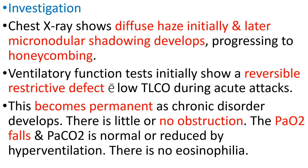Investigations: chest X-ray shows diffuse haze initially, and later micronodular shadowing develops, progressing to honeycomb. Ventilatory function tests initially show a reversible restrictive defect with low TLCO (total lung capacity) during acute attacks. This becomes permanent as chronic disorder develops; there is little or no obstruction.